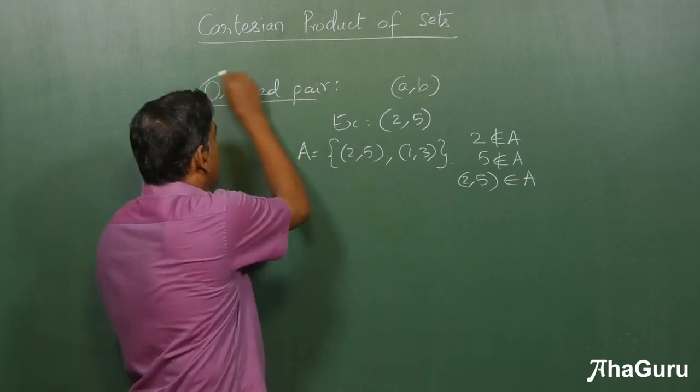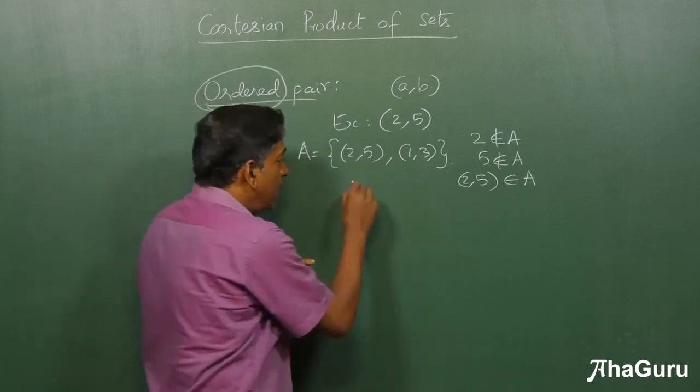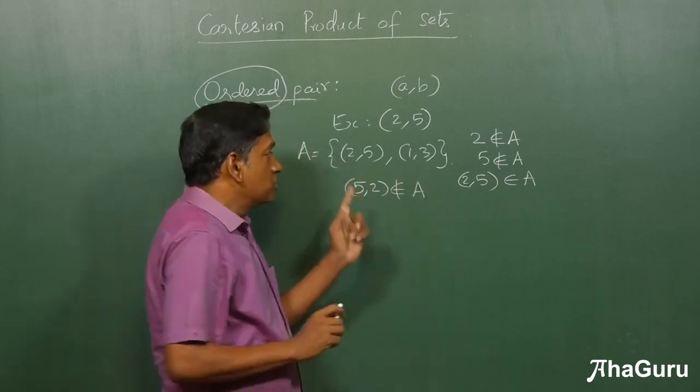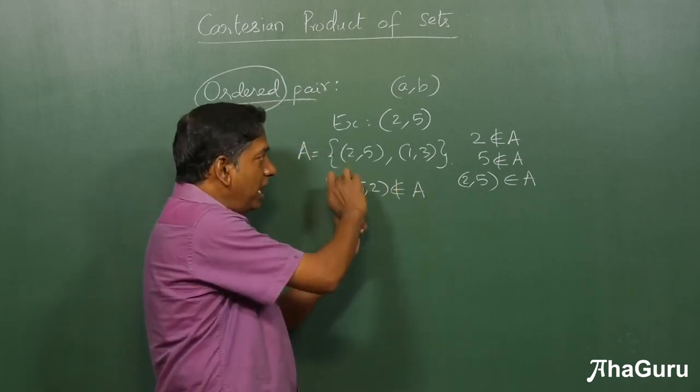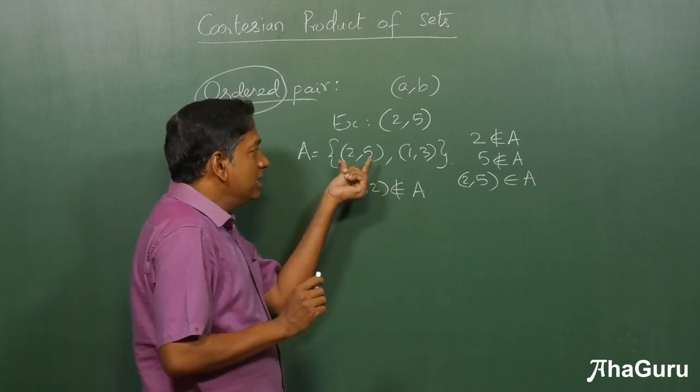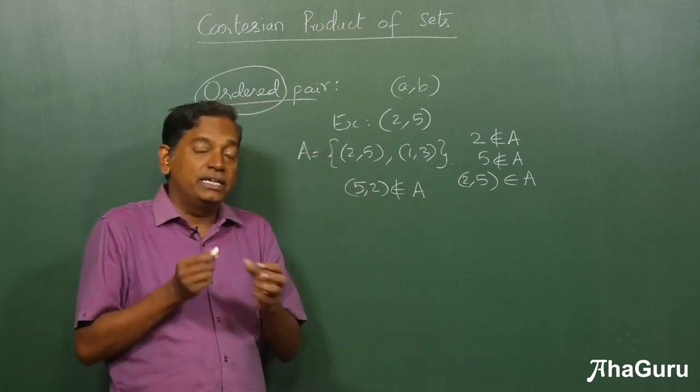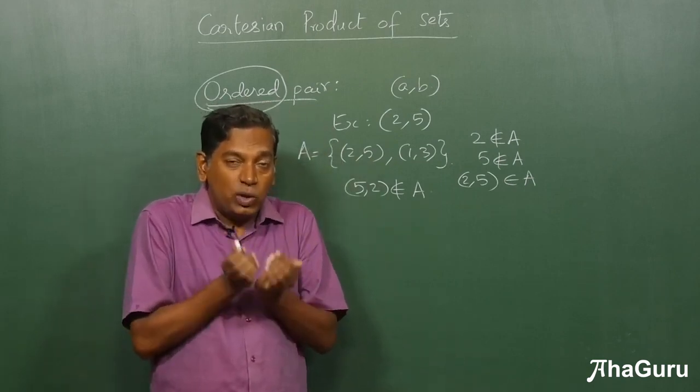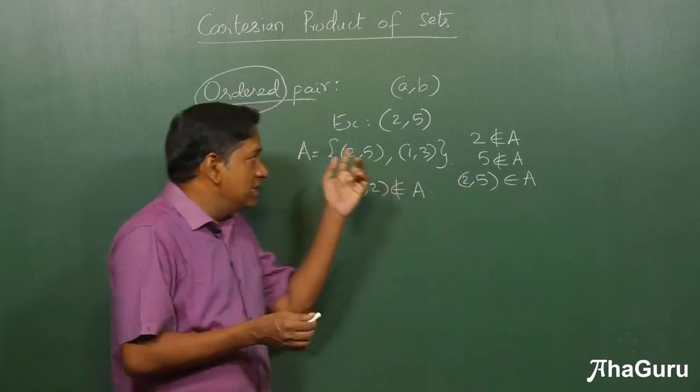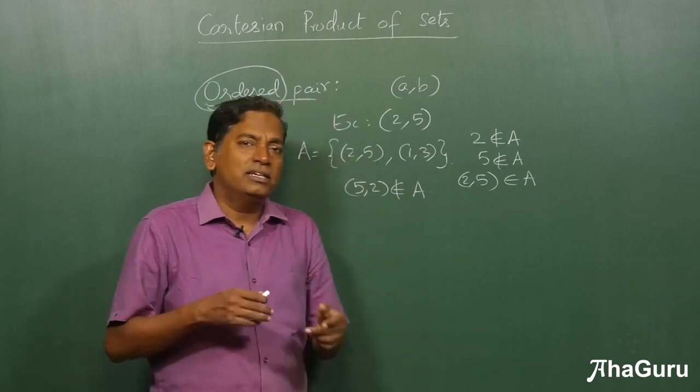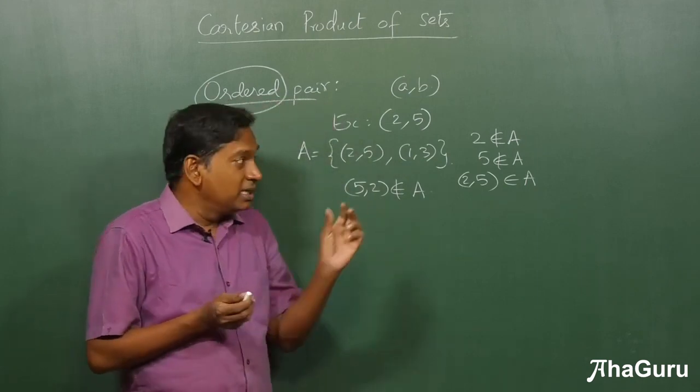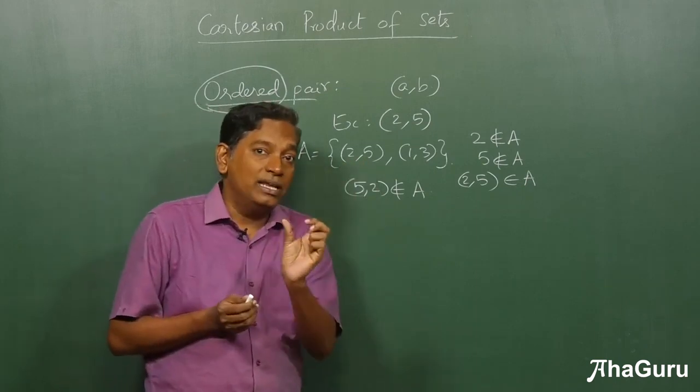But because it is ordered, we can say (5,2) does not belong to A. If you swap the a and b, then the element changes. It's a new kind of entity where we have two elements which together form a pair. These two can be numbers, but they can also be letters or some other objects. But the point here is the pair is treated as one element and it is denoted by round brackets.